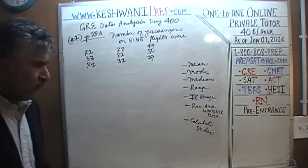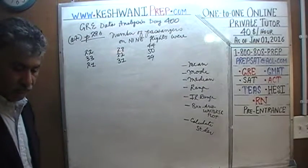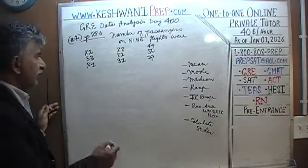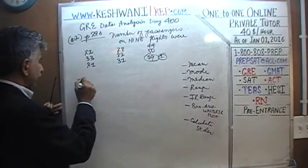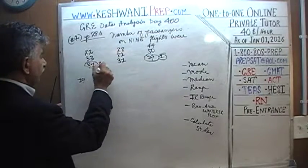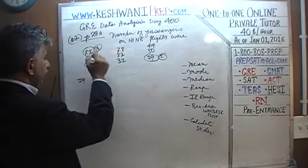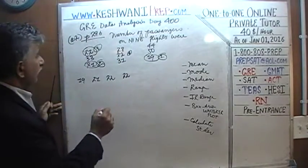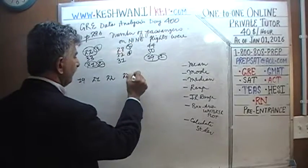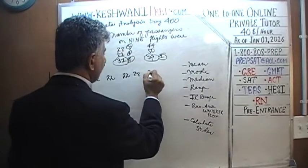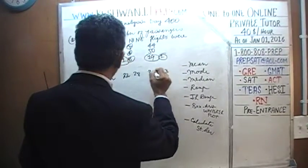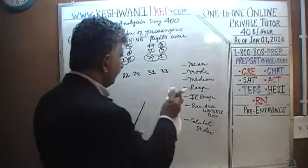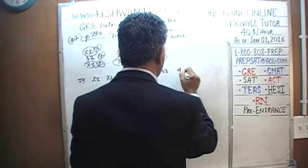The very first thing we need to do is put the observations in order — ascending order, starting with the smallest and going to the largest. In increasing order: 19, 21, 22, 22, 28, 31, 33, 44, and 50.